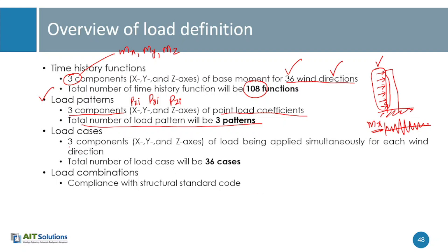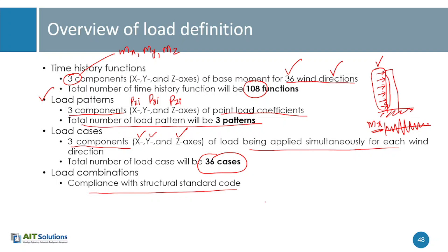Since we have 36 directions total, we will have 36 load cases for this complete dynamic analysis against wind. These 36 cases will then be used in different load combinations, and those load combinations come from the structural design code the designer is using. So they will be used next in the combinations for design against wind.